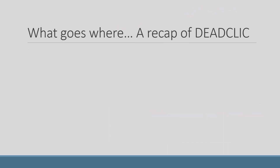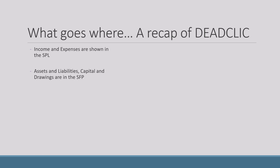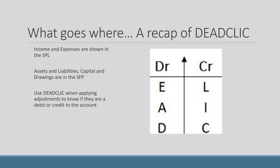A key thing when doing your extended trial balance is knowing what goes where. Your income and expenses are shown in the statement of profit and loss. Your assets, liabilities, capital and drawings go in the statement of financial position. I'm a big fan of DEADCLIC — it really helped me during my studies, and I like to bring everything back to it so that the understanding is consistent and can be applied whenever you're doing double entry bookkeeping.